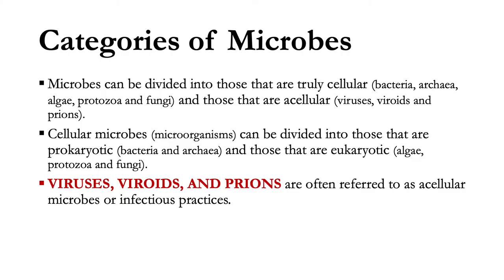Microbes can be divided into those that are truly cellular — these include the bacteria, the archaea, algae, the protozoa, and fungi — and those that are acellular: viruses, viroids, and prions. The cellular microorganisms can be subdivided into prokaryotic (bacteria and archaea) and eukaryotic (algae, protozoa, and fungi).